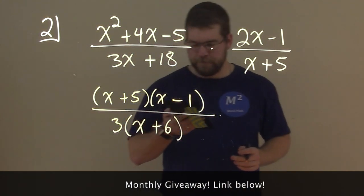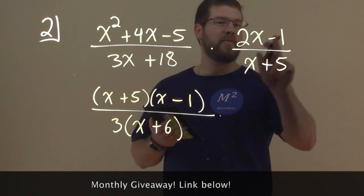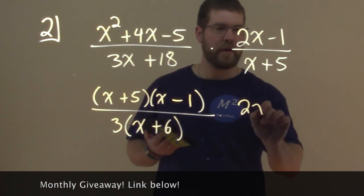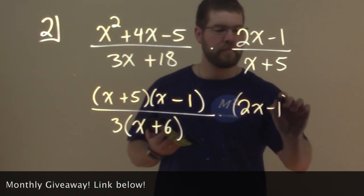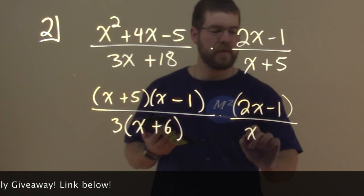What about the second part here? Okay, can we simplify the numerator at all? I don't see anything. 2x minus 1. Denominator, x plus 5.